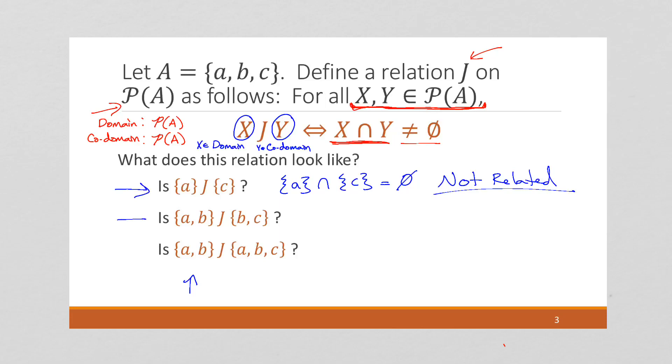How about this next one? Well, these both have a b, so it turns out these are related. Yes. And the justification is that {a, b} intersect {b, c}, the result is {b}, which is not equal to the empty set. And that's our rule, is that these two sets are going to be related if their intersection is not empty.